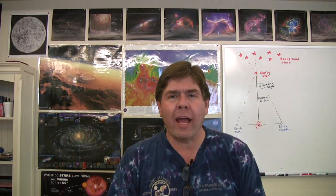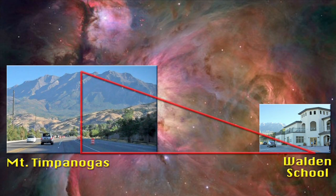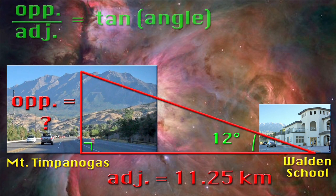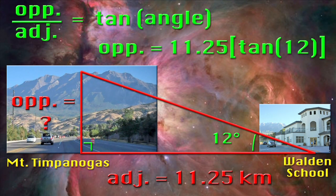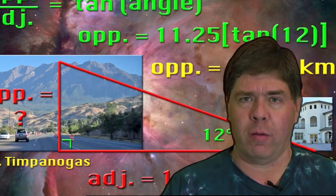Now let's do our calculations. Here's the right triangle. The distance to the base of the mountain is the adjacent side of the triangle from our angle, which is 11.25 kilometers. We want to know the height, which is the opposite side from our angle. The tangent function of our angle equals the opposite side over the adjacent side. Doing a bit of algebra, we solve for the opposite side: the tangent of 12 degrees times 11.25 kilometers equals the height of the mountain.